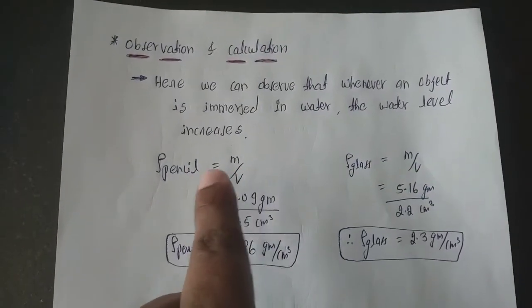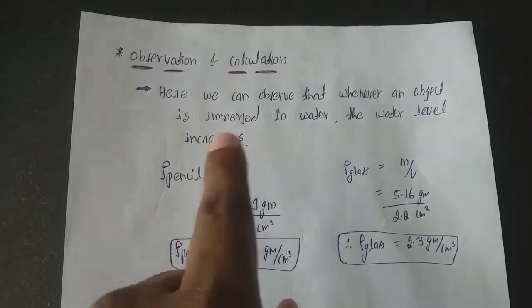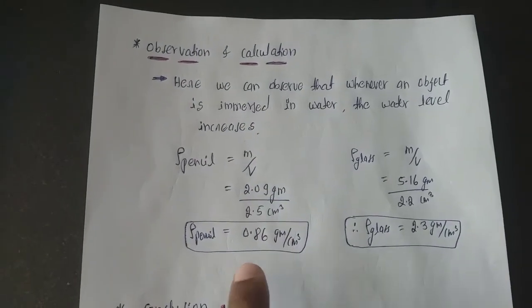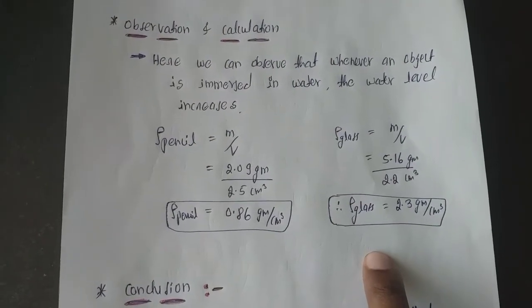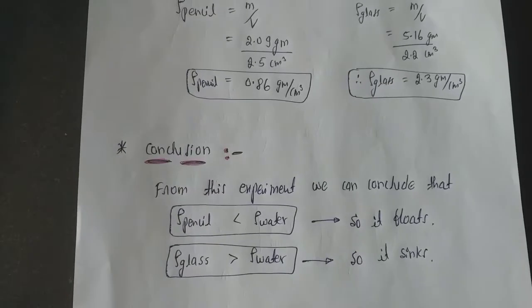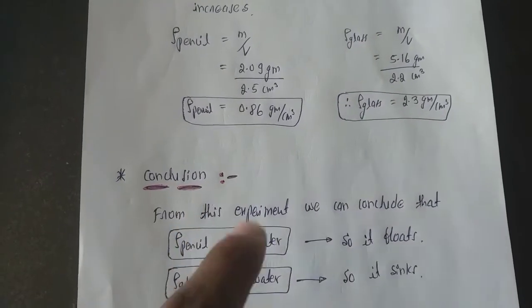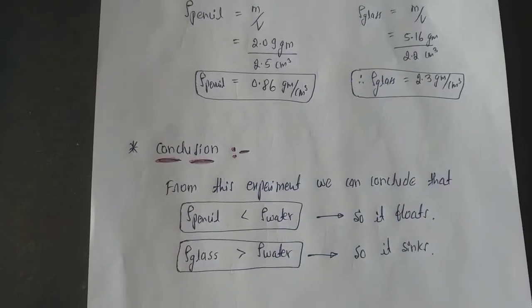Then calculation part, you use the formula mass by volume, density equals to mass by volume, and calculate the density of pencil and density of glass. At last, we have to mention the conclusion. We have to conclude the experiment.